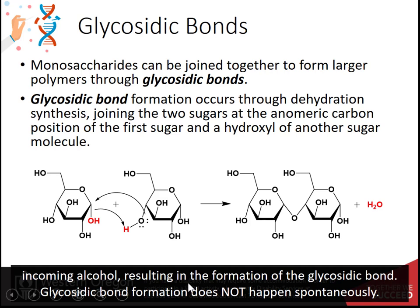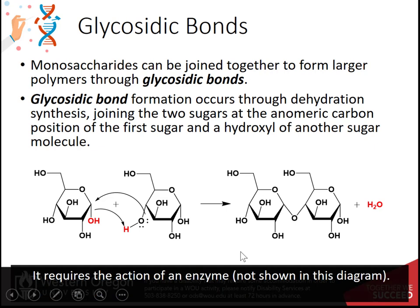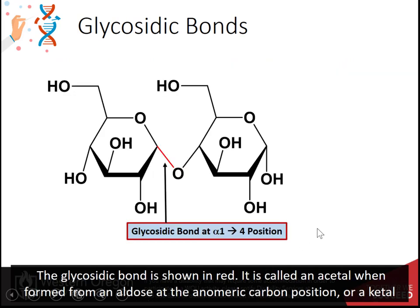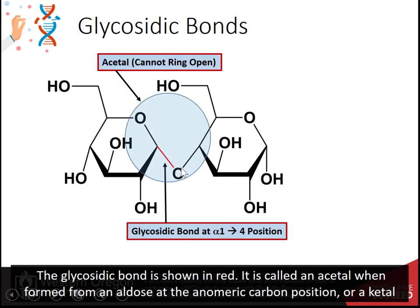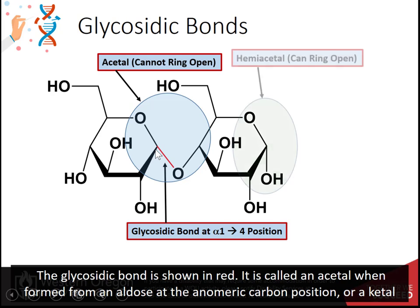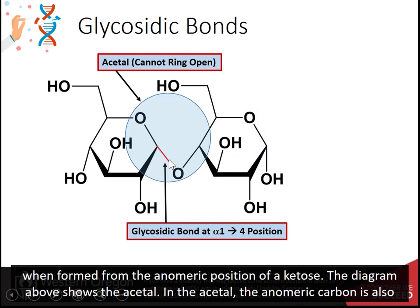Glycosidic bond formation does not happen spontaneously — it requires the action of an enzyme. The glycosidic bond is called an acetal when formed from an aldose at the anomeric carbon position, or a ketal when formed from the anomeric position of a ketose. The diagram above shows the acetal.